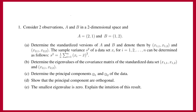Hello everyone. In this video, we will illustrate how to apply PCA by using a very simple dataset. In our case, the dataset only has two observations, which we denote by A and B, and the observations are given here. What we will do is determine the principal components of this dataset by searching for the eigenvectors and the eigenvalues of the variance-covariance matrix.